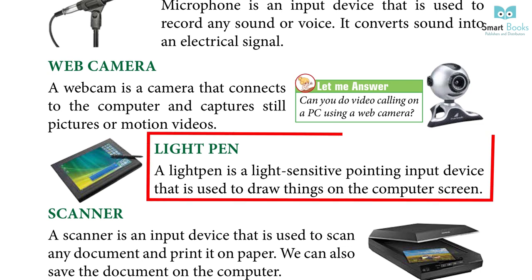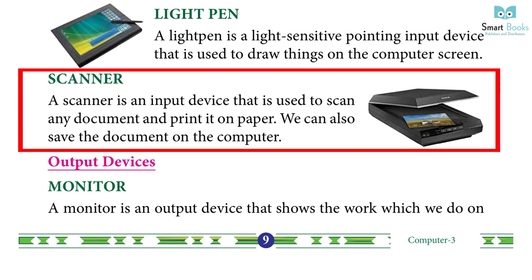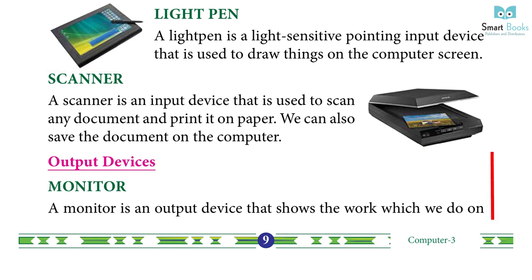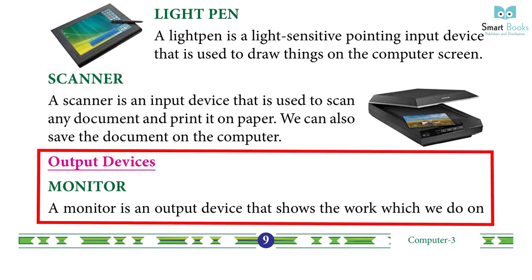Light pen: A light pen is a light-sensitive pointing input device used to draw things on the computer screen. Scanner: A scanner is an input device used to scan any document and print it on paper. We can also save the document on the computer.